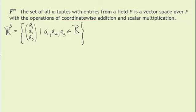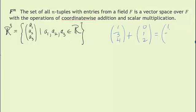One type of vector space is F^n: the set of all n-tuples with entries from a field F, and it is a vector space over F with the operations of coordinate-wise addition and scalar multiplication. For example, R^3: if we add vectors in R^3, say (1, -3, 4) and (0, 1, 2), we add component-wise, so we have 1+0, -3+1, and 4+2. That's called component-wise addition.